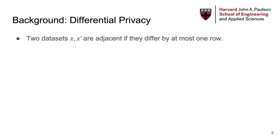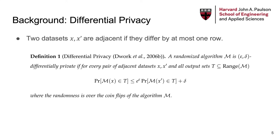To formalize this, we call two datasets adjacent if they differ by at most one row. A mechanism is epsilon-delta differentially private if for any adjacent dataset x and x', for every possible output event t, the probability that we see t when the dataset is x is at most e to the epsilon times the probability that we see t when the dataset is x' plus delta, where the probability space is over the coin flip of the algorithm.